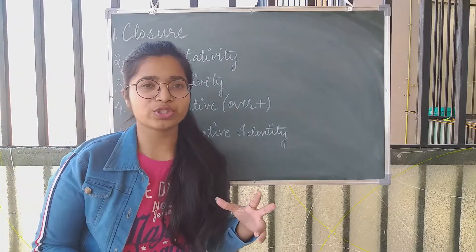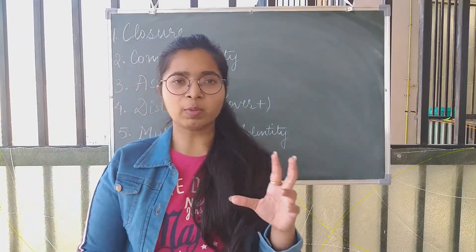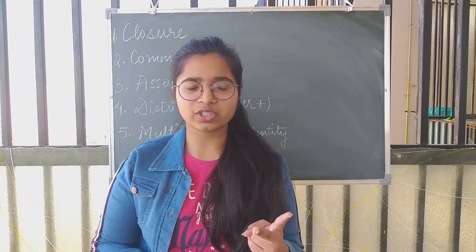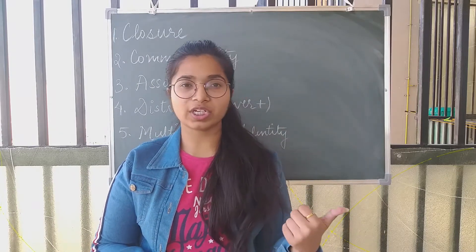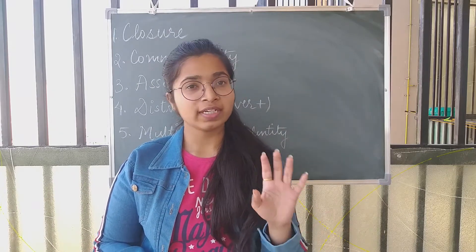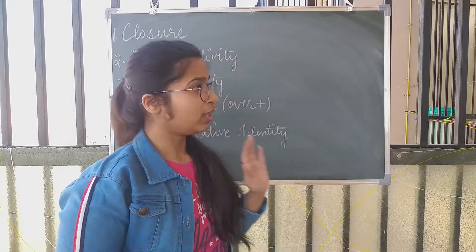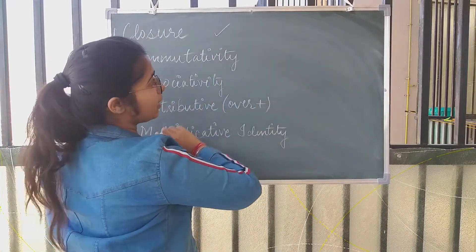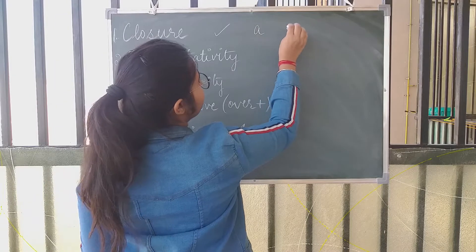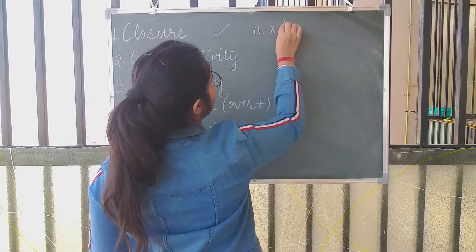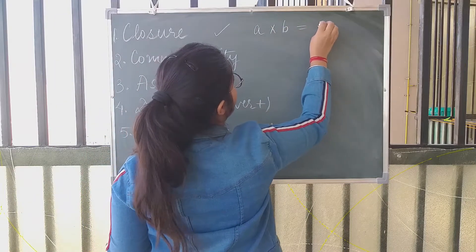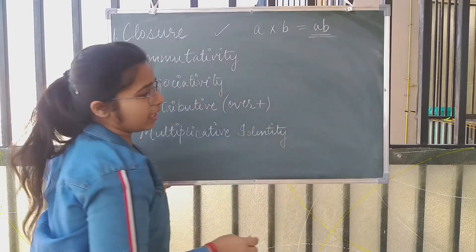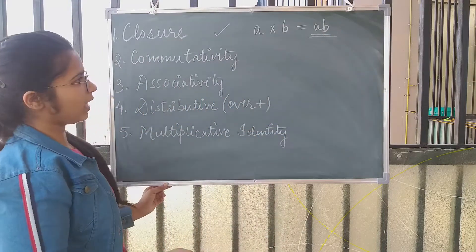Firstly, we have closure. Closure means the set is closed — it stays within itself. That means, if I take two integers, their product should always be an integer. And integers are closed under multiplication. That means, if there are two integers a and b, when I multiply them, I will always get an integer a×b. a×b will always be an integer.